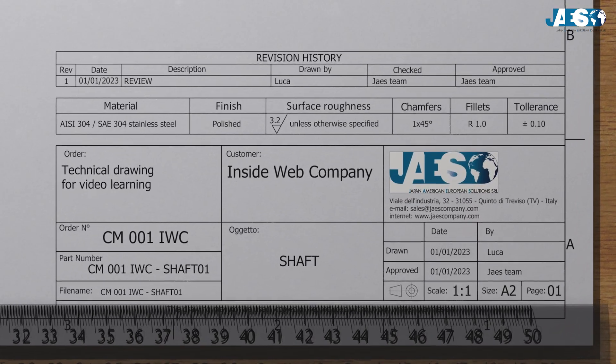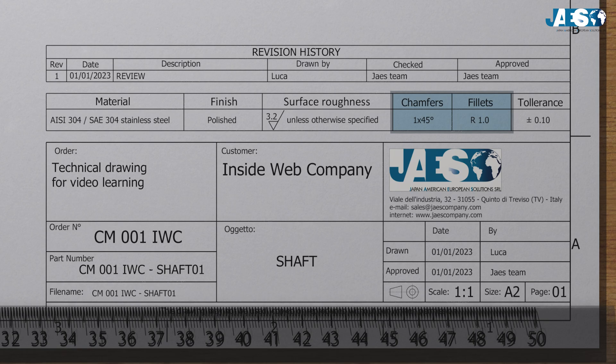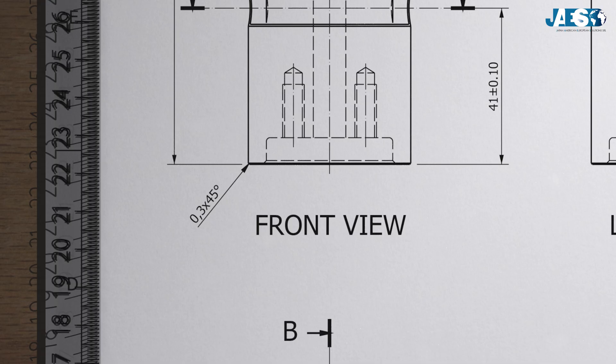Similar to the above, there are undimensioned fillets and chamfers. These general figures must be taken into account unless a fillet or chamfered edge is specified in the dimension.